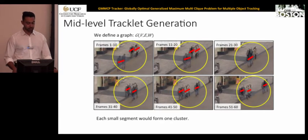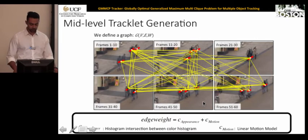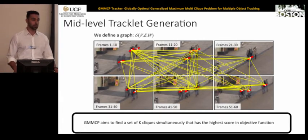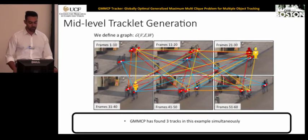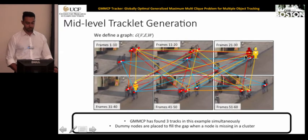Each segment forms one cluster, and each node in each cluster is connected to all other nodes in all other clusters. The edge weights come from appearance similarity and the motion model. The goal of GMMCP is to select k nodes from every cluster that form k cliques with maximum score across the complete graph. After solving GMMCP, we get all three tracks simultaneously. When a detection is missing, dummy nodes are placed in the right location to fill the gap.